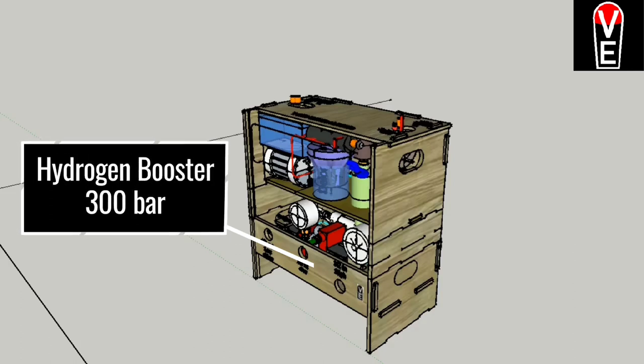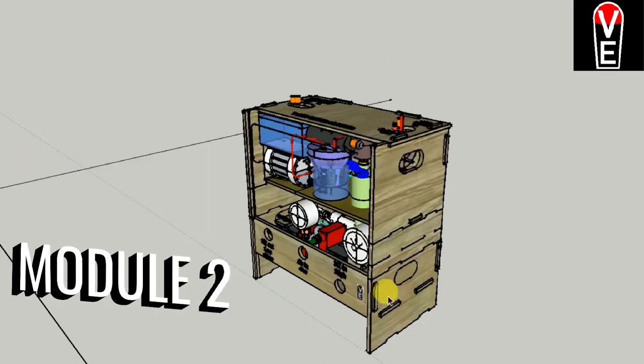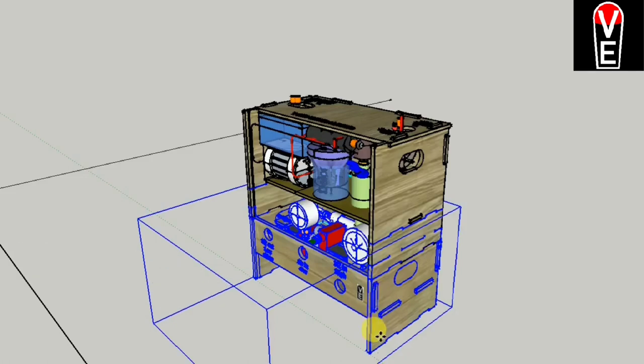300 bars is the industry standard for hydrogen cylinders, so module 2 can boost up the pressure.